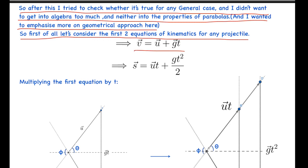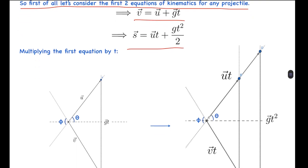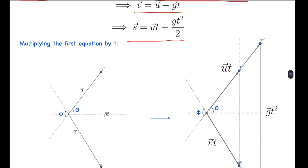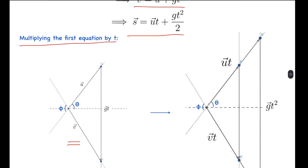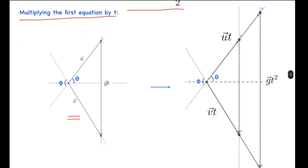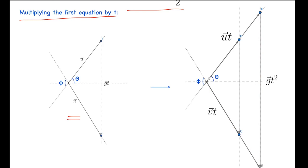First let's consider the first two equations of kinematics for any projectile. The first equation is v = u + g·t, and s = u·t + ½g·t². Drawing the vector diagrams of these two: the initial velocity vector is u, the gt vector is added to it, and the result is the final velocity vector v. If we multiply the first equation by t, each velocity gets scaled by t, so the lengths become ut, vt, and gt².